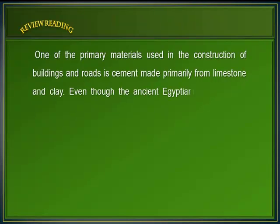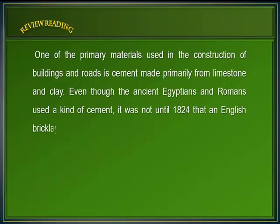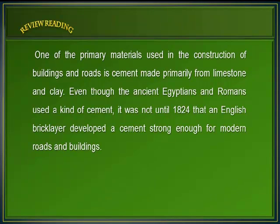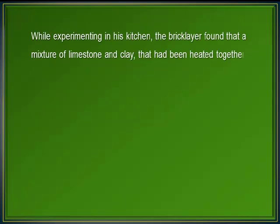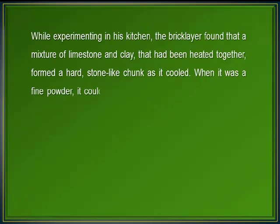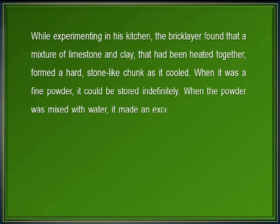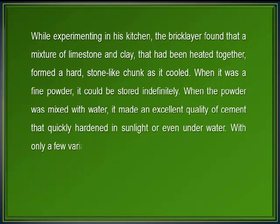One of the primary materials used in the construction of buildings and roads is cement made primarily from limestone and clay. Even though the ancient Egyptians and Romans used a kind of cement, it was not until 1824 that an English bricklayer developed a cement strong enough for modern roads and buildings. While experimenting in his kitchen, the bricklayer found that a mixture of limestone and clay that had been heated together formed a hard stone-like chunk as it cooled. When it was a fine powder, it could be stored indefinitely. When the powder was mixed with water, it made an excellent quality of cement that quickly hardened in sunlight or even under water. With only a few variations, this is how cement is made today.